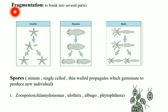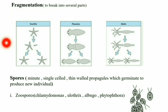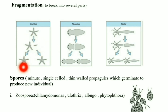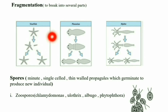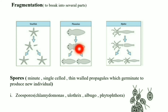Fragmentation: as the name suggests, fragment means piece. Sometimes the body of an organism breaks into distinct pieces, and each piece or fragment grows into an adult which is capable of producing offspring. These fragments form complete new individuals.